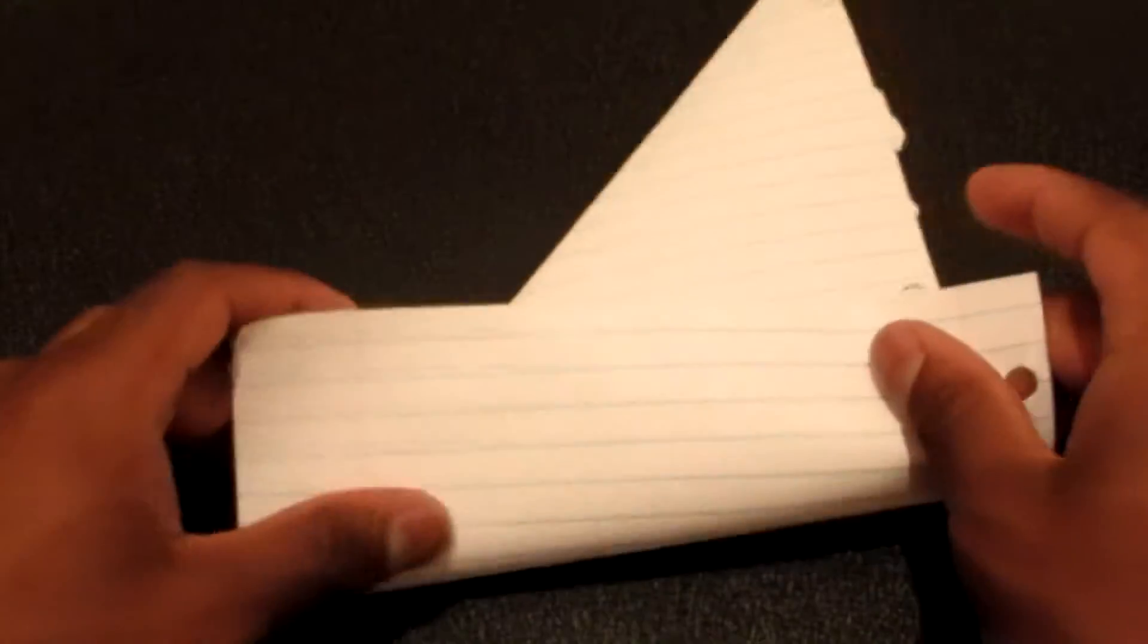Then what you want to do is take the bottom part right here, turn it over and fold it upwards against the line of this. So when you do it, it should look like... You don't got to turn it over, I'm just comfortable folding in the air.